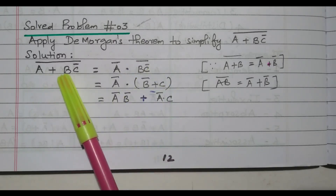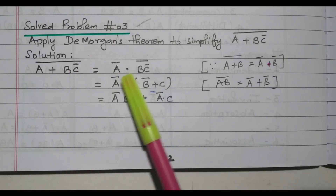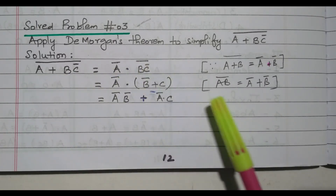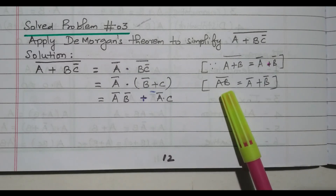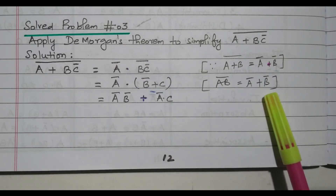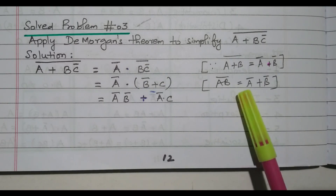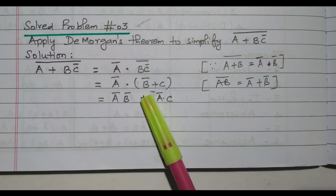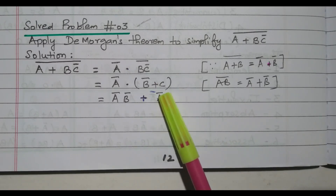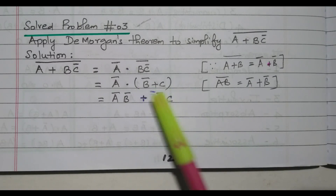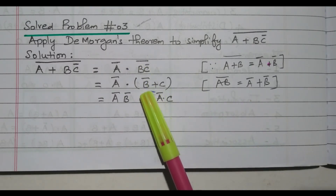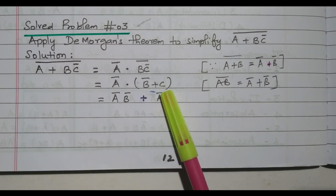So A plus B the whole bar equals A-bar dot B-bar. Again, this BC-bar the whole bar can be written using the theorem AB the whole bar equals A-bar plus B-bar. So BC the whole bar is written as B-bar plus C-double-bar. C-double-bar is nothing but C.